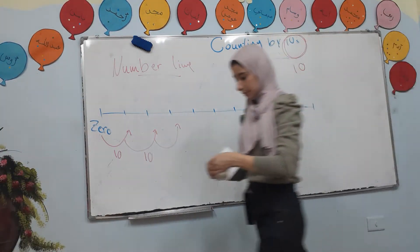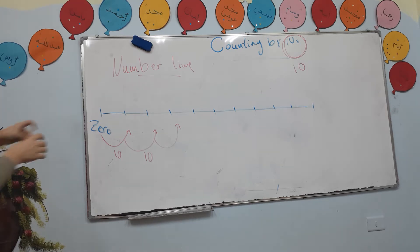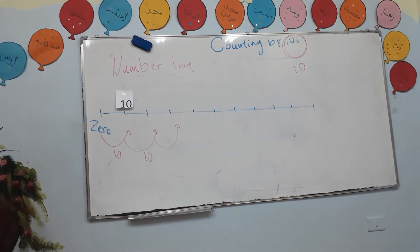If I was here at zero, next I will jump to ten. So here is ten. What if I add ten more? What comes after ten if I add ten more? What number will come after ten if I count ten more?